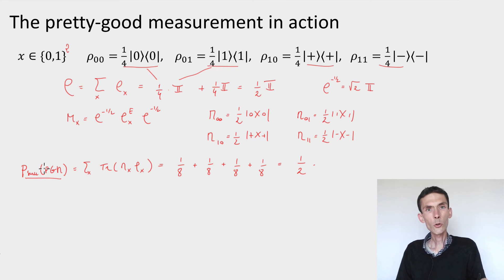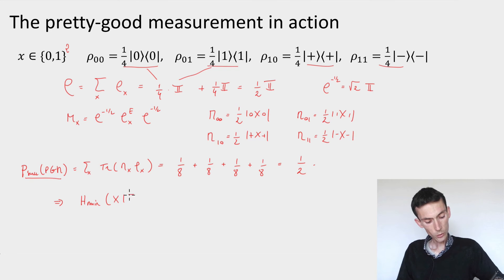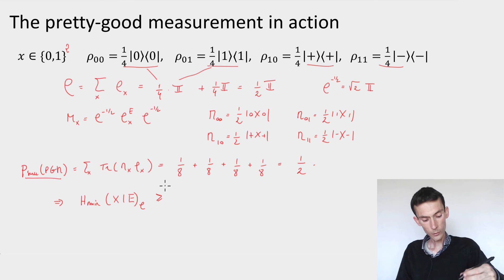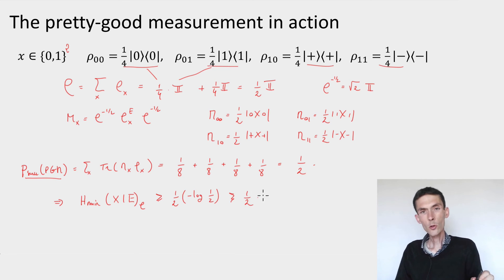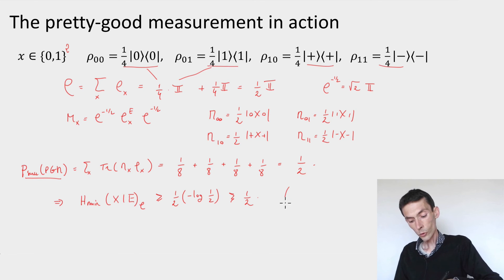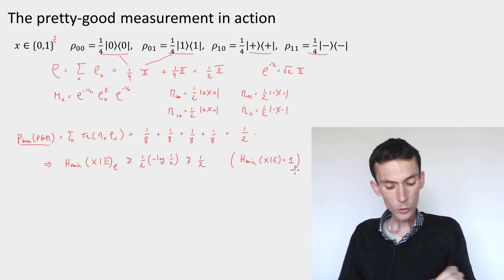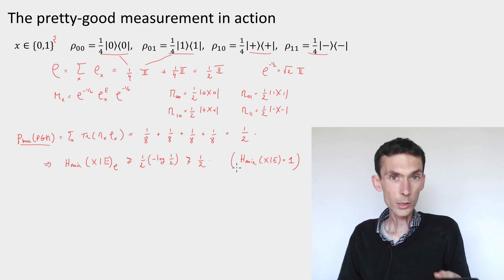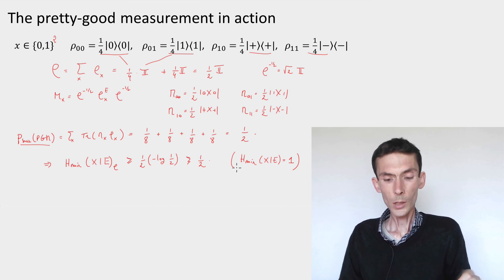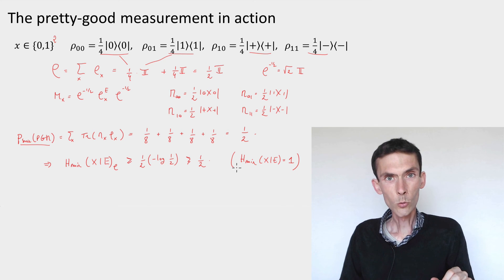As we saw in the previous module, the success probability of the PGM can be used to get a lower bound on the min-entropy of the ensemble of states. As a consequence, we get that the min-entropy of x conditioned on E, given the family of states described here, will be at least one half times the minus log of the success probability of the pretty good measurement, which gives at least one half times minus log of one half, which is one — so I get at least one half. This is a lower bound on the min-entropy. What you can check is that on this example the min-entropy of x given E is exactly equal to one, so you can see that as promised, the bound is within a factor of one half of the optimum. This is actually the worst case for the pretty good measurement, but it's not so bad — it's a factor of one half from the optimum, and it's a reasonable measurement to use in practice. It's also going to prove a very powerful tool in theoretical analysis.